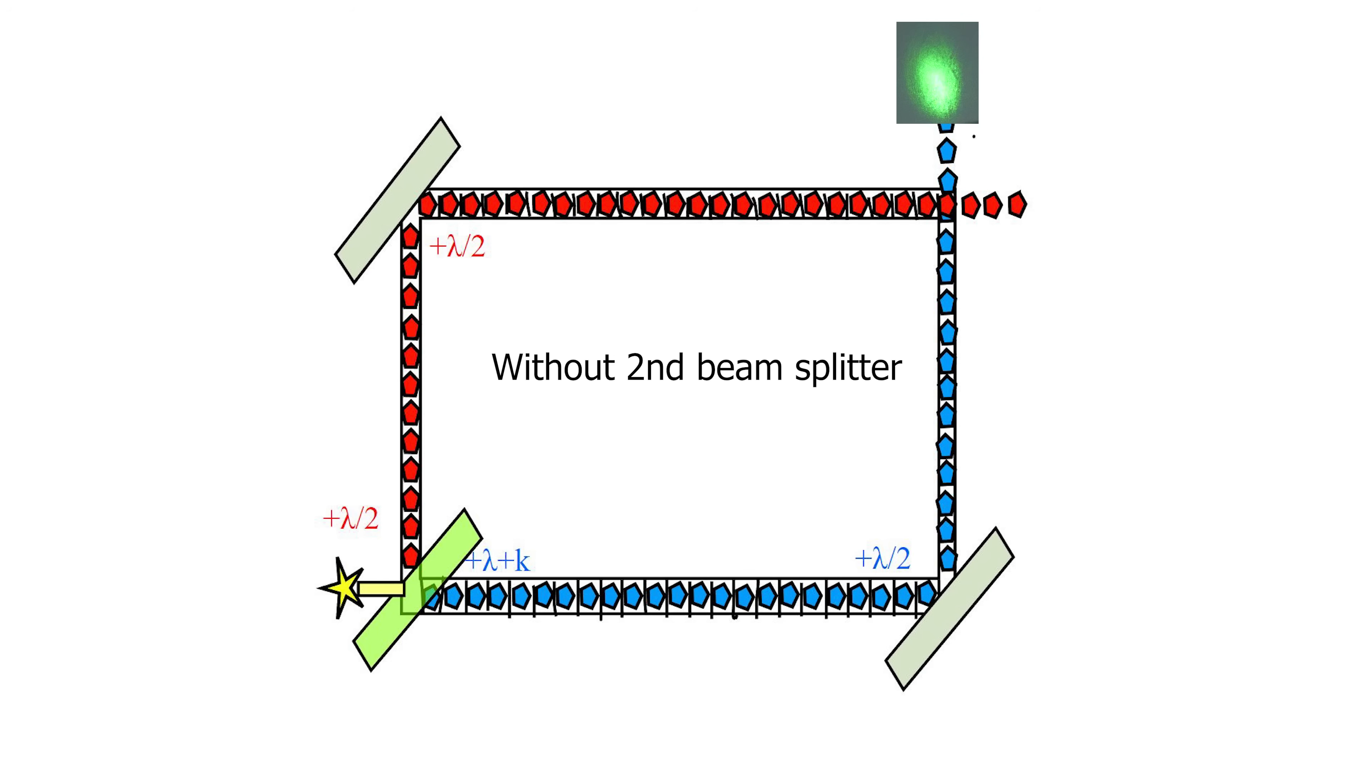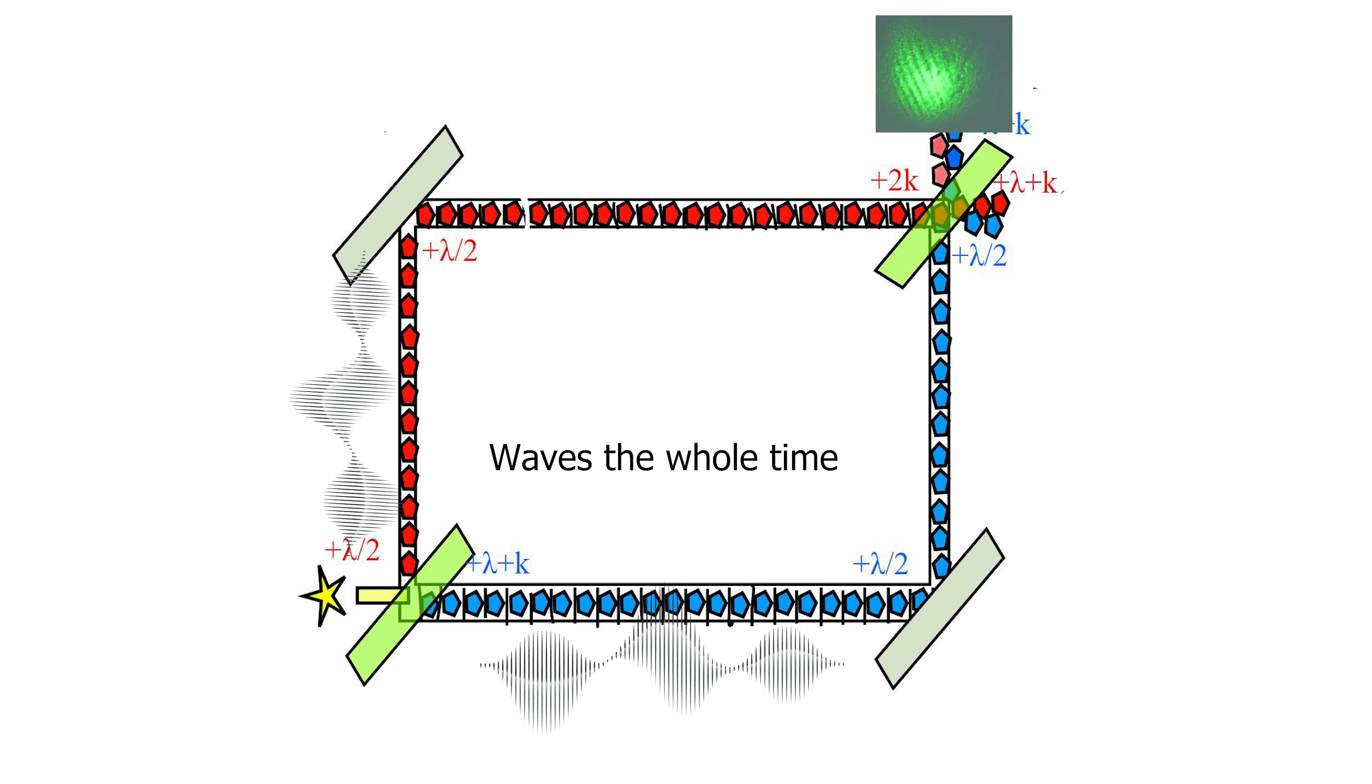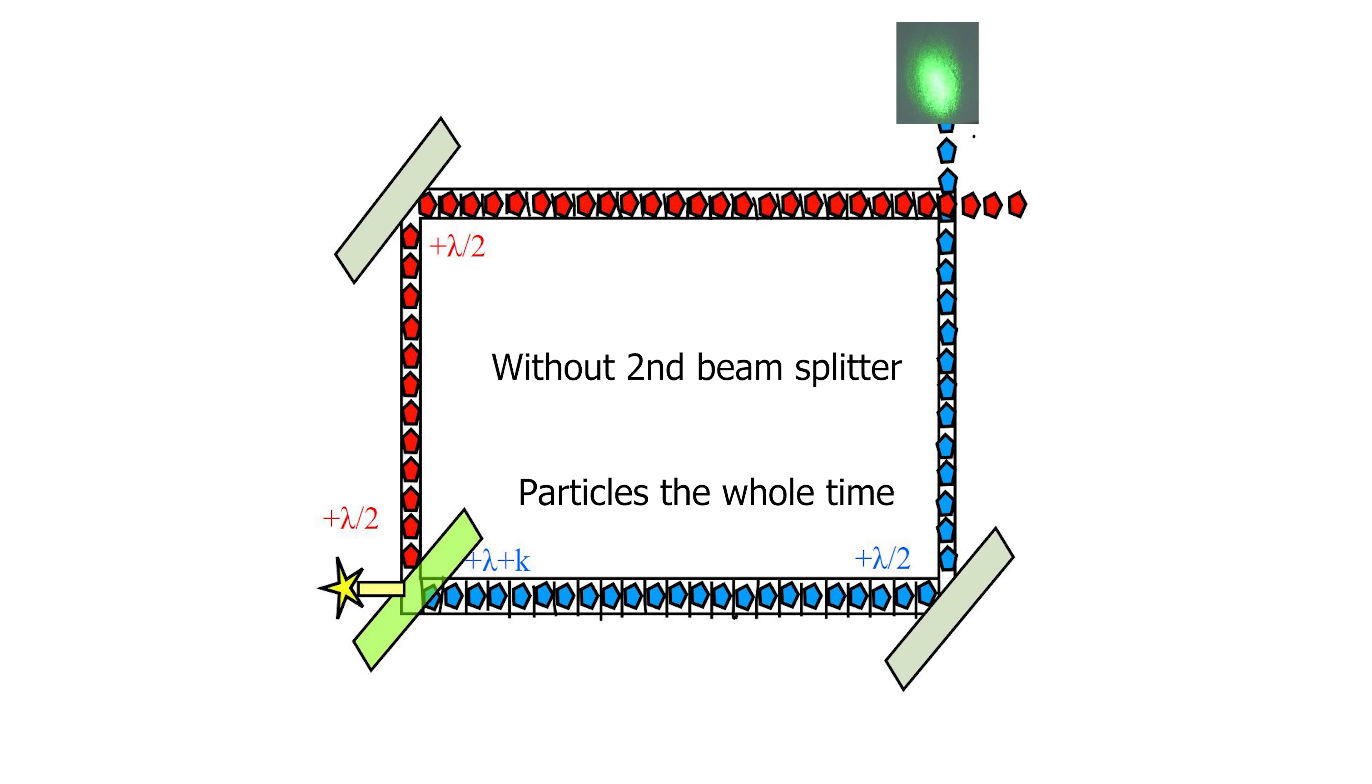So it's as if the photons have to decide whether to travel as a wave or a particle, based on if the second beam splitter is here or not. If it's here, then the photons traveled as waves the whole time, but if I remove it, then they traveled as particles the whole time.